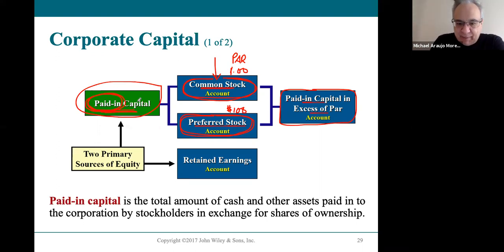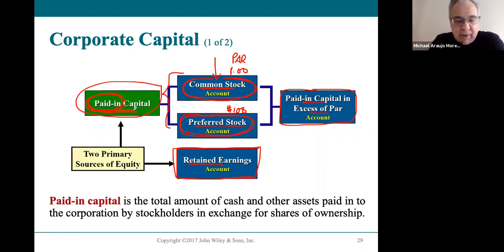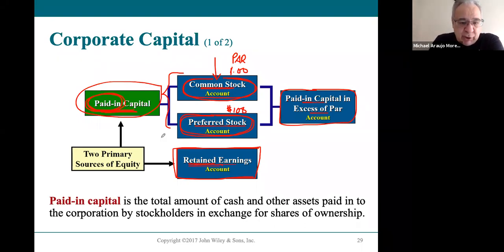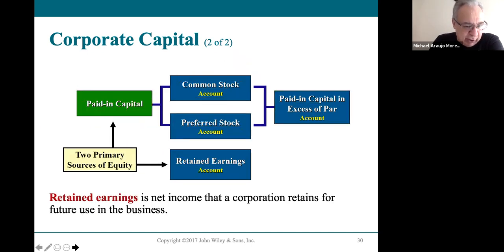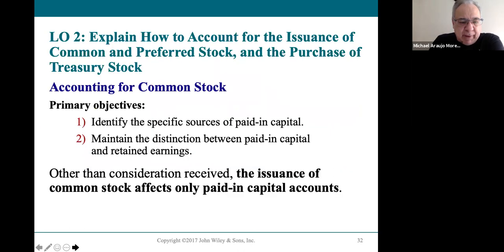Paid-in capital is not the only source of capital the company has — the company also has retained earnings, which is the profits of the company that have been retained and not paid out as a dividend. Those are the two different ways we look at equity: paid-in capital and retained earnings. Any type of stock is a paid-in capital account because owners literally have to pay in the money to get the shares.